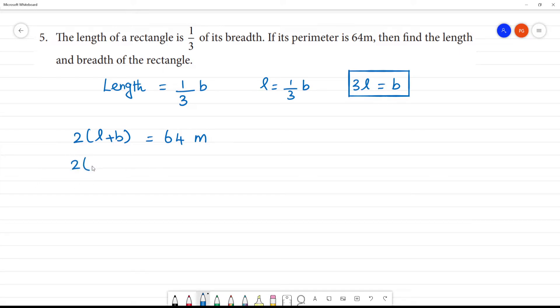2 multiplied by l plus, the breadth of the rectangle is 3l. That is equal to 64 meter. So what is l plus 3l? That is 4l. That is equal to 64 divided by 2 meter.